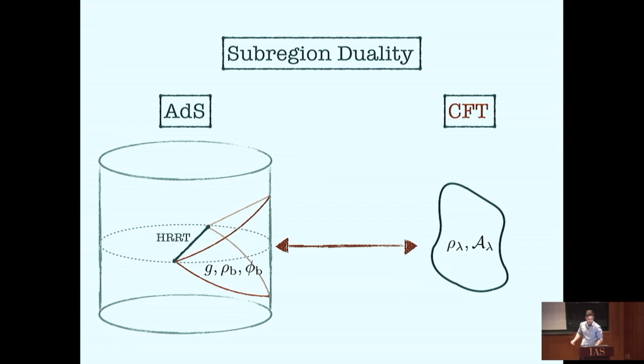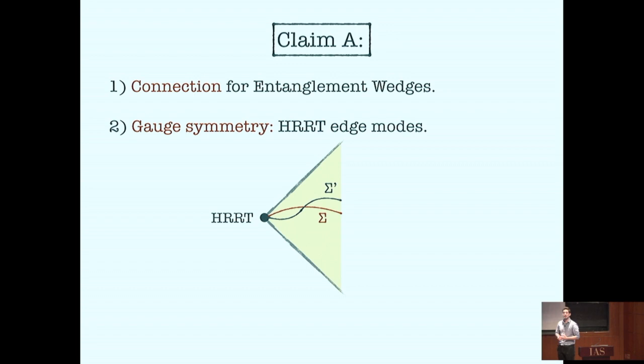The first claim I will make today is that one can describe the relations between entanglement wedges by introducing a connection — a geometric connection for them. By talking about a connection, I'm implicitly referring to some sort of gauge symmetry: a gauge symmetry in the space of entanglement wedges. The gauge symmetry will essentially be diffeomorphism invariance, since the physics in each of these entanglement wedges is invariant under the action of diffeomorphisms.